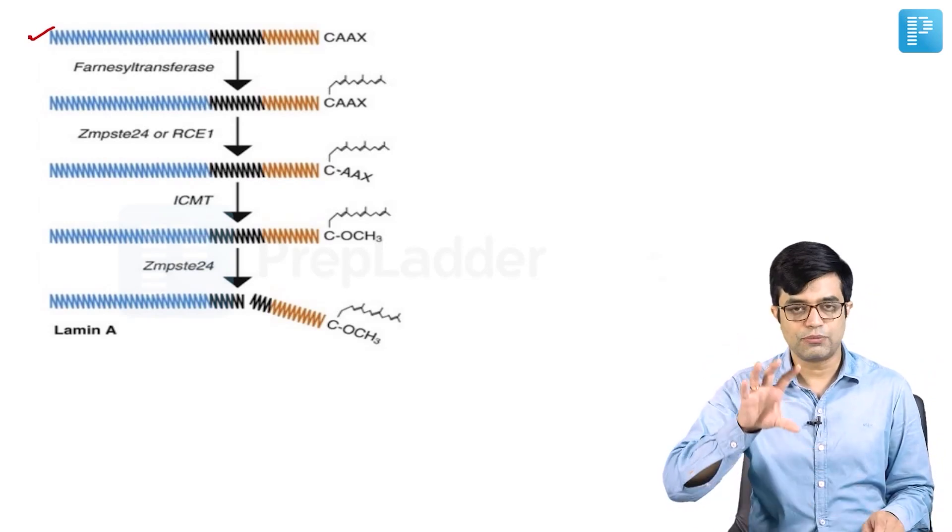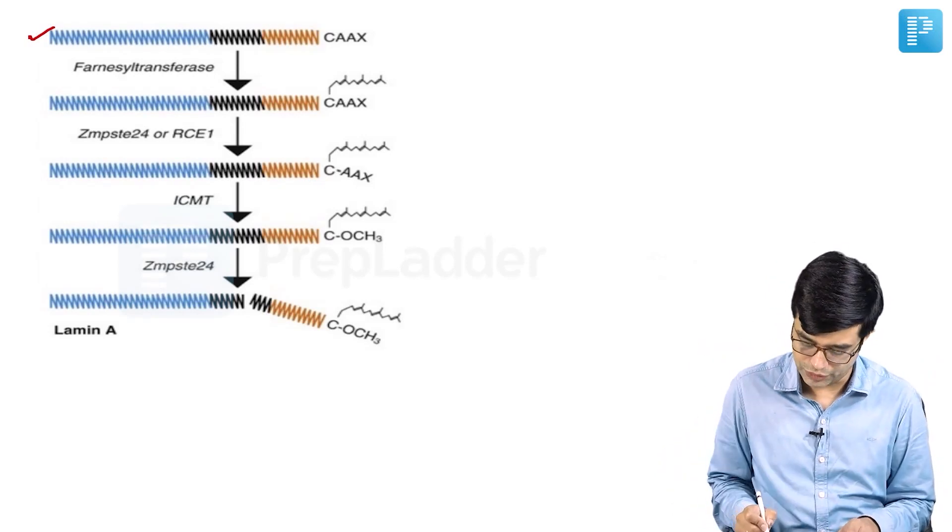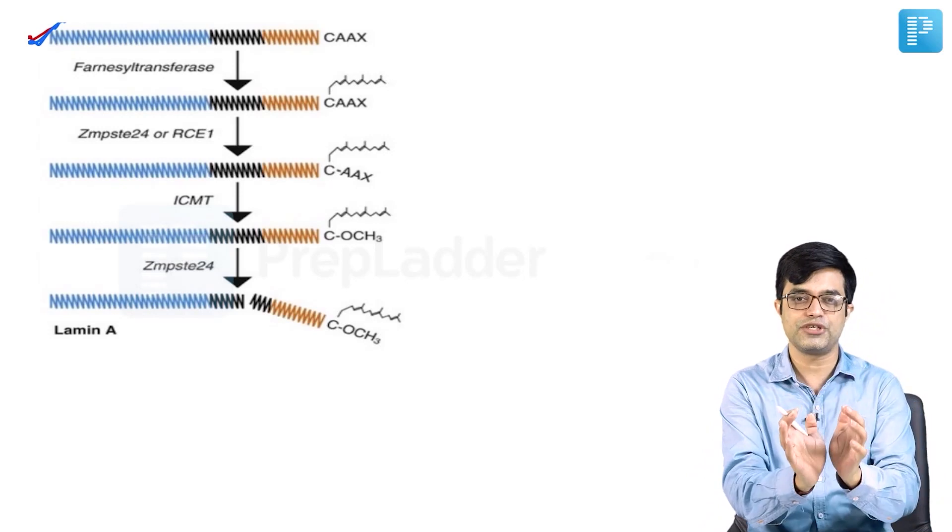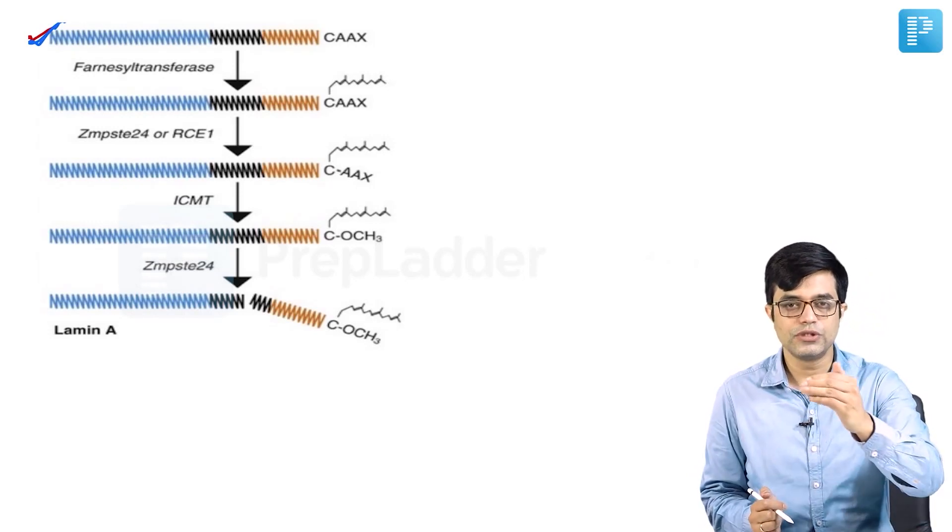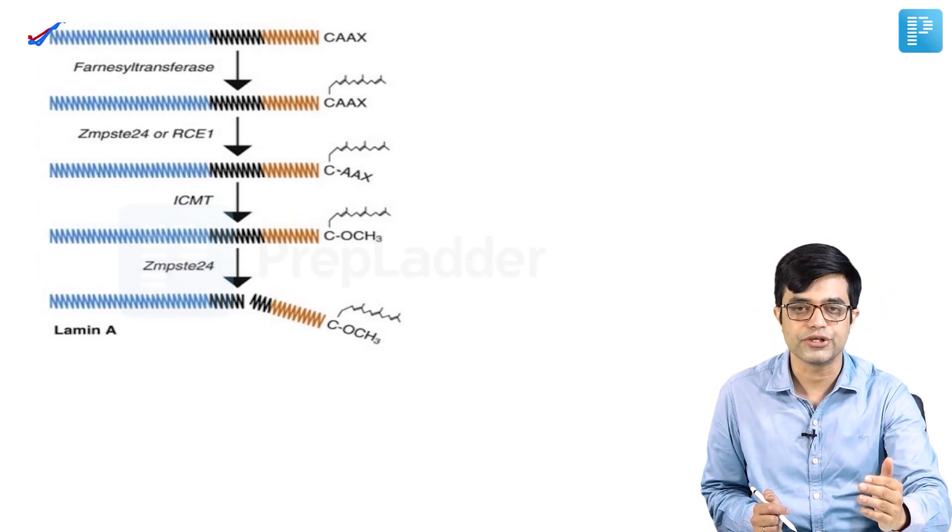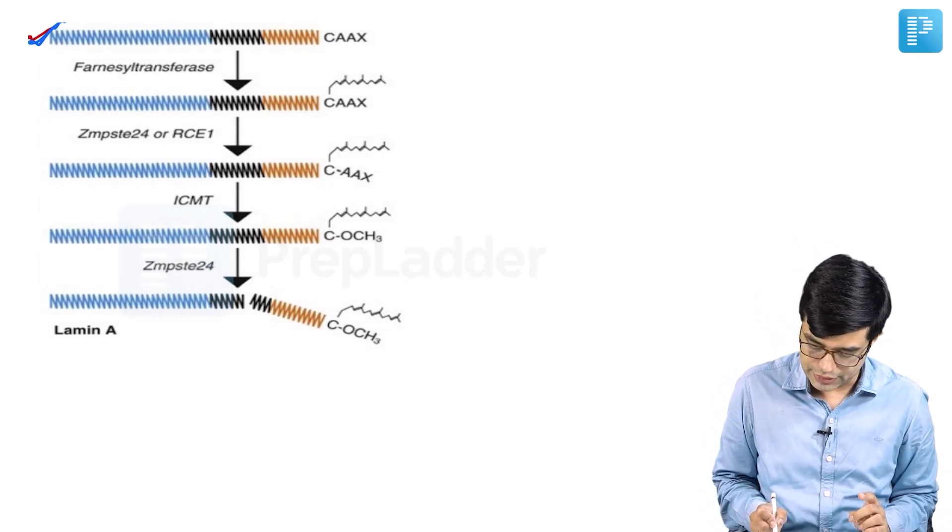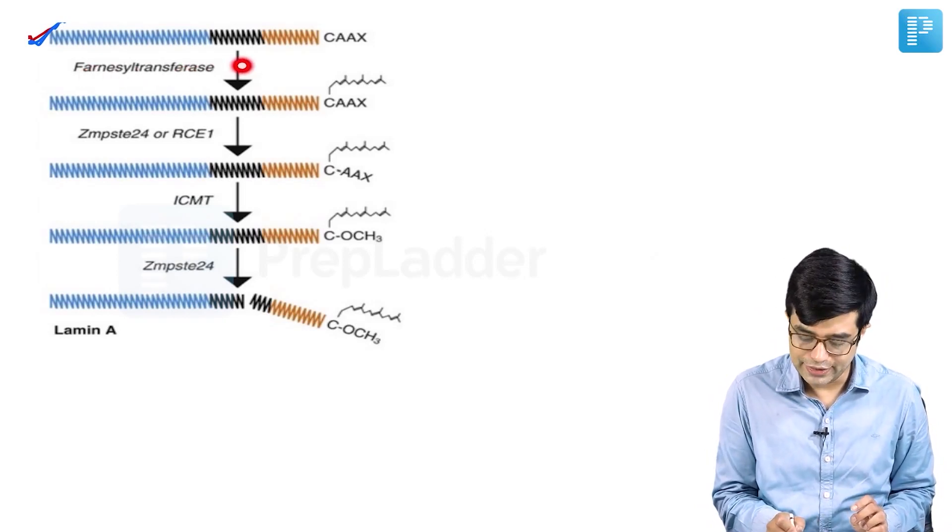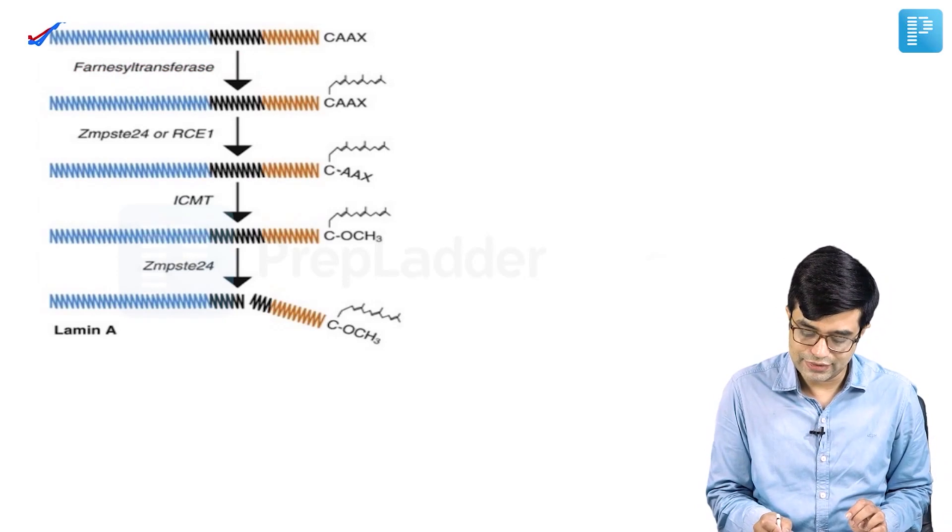Initially, once the protein is formed, this is the nascent protein. This protein goes into endoplasmic reticulum and Golgi apparatus and the process of post-translational modification starts. In the first process, you will have farnesyl transferase enzyme acting here. Look at this terminal end.